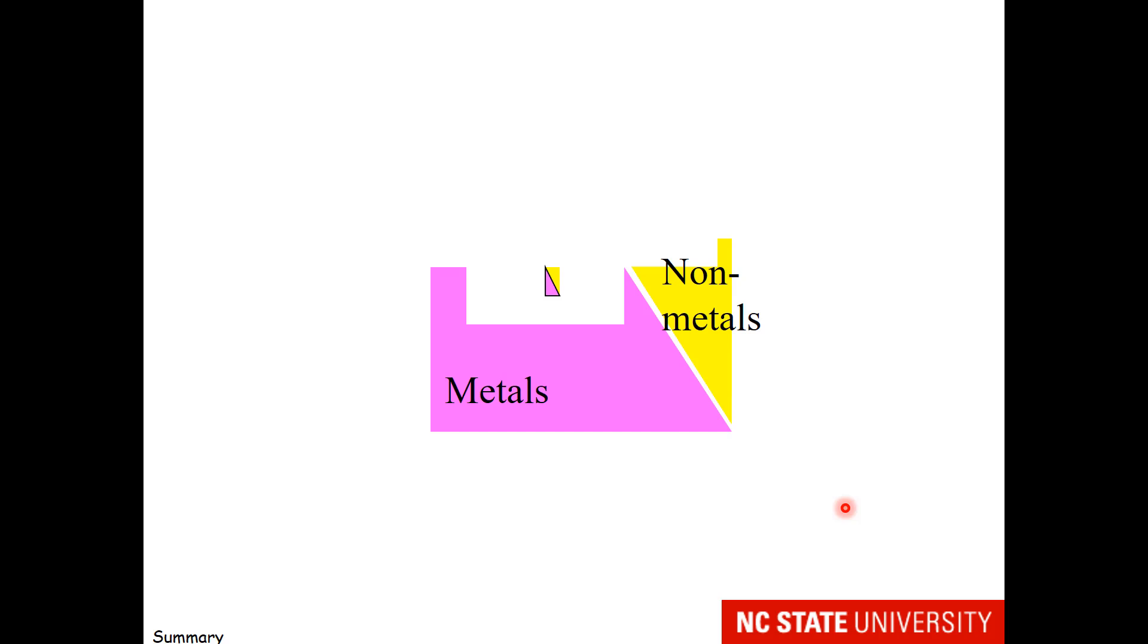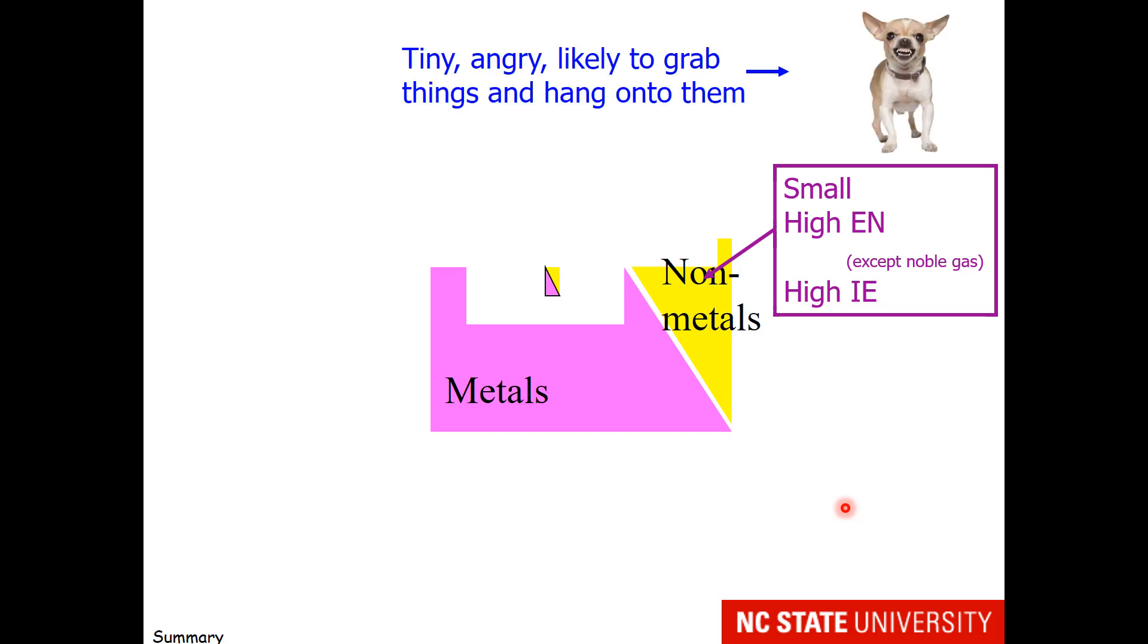Here is a diagram of the trends of the periodic table. In general, materials on the upper right of the periodic table are small. They have a high electronegativity and a high ionization energy. So in some ways, you might think about things on the upper right, like fluorine,